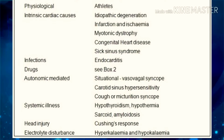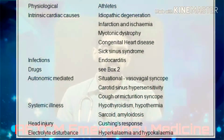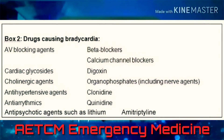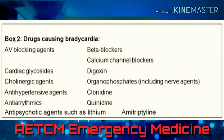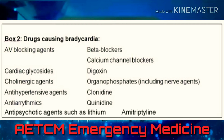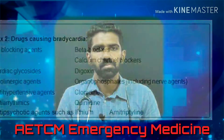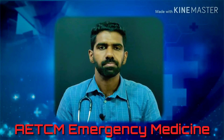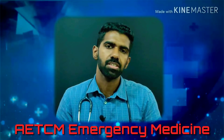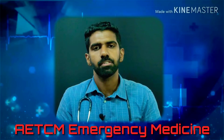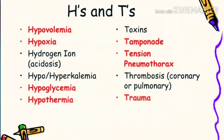Traumatic causes include head injury resulting in Cushing's response. Electrolyte disturbances such as hyperkalemia and hypokalemia can cause bradycardia. Many drugs cause bradycardia through AV block, including AV node blocking agents like beta blockers, calcium channel blockers, cardiac glycosides like digoxin, antipsychotics like lithium or amitriptyline, antihypertensives like clonidine, and antiarrhythmics like quinidine.